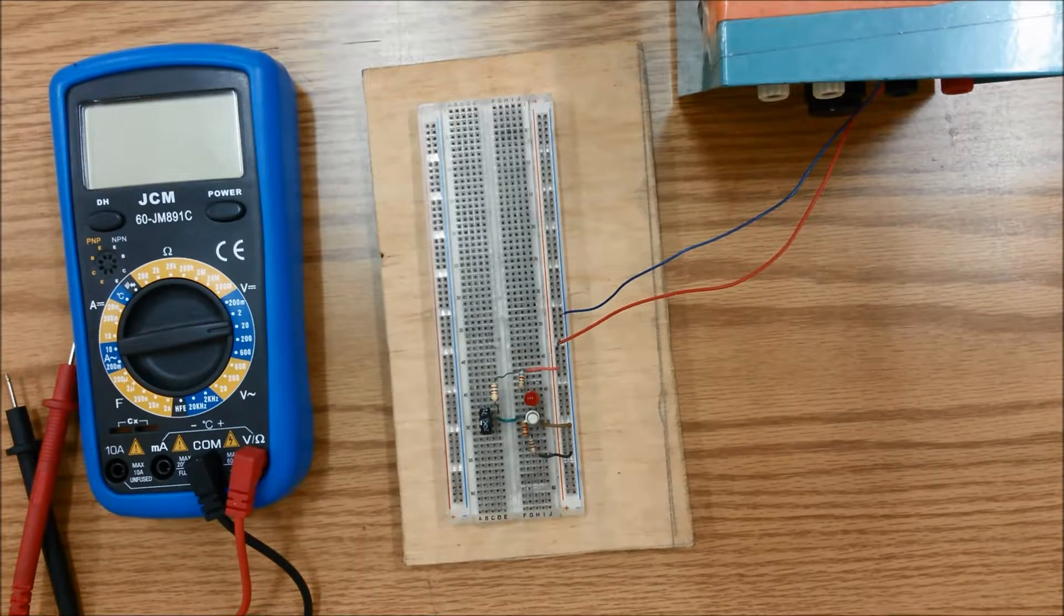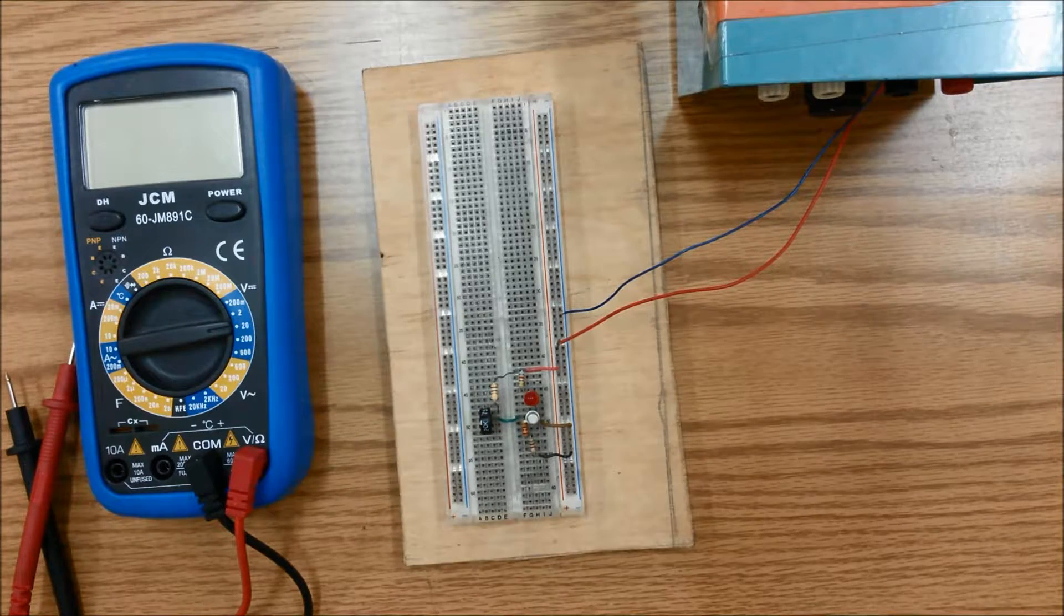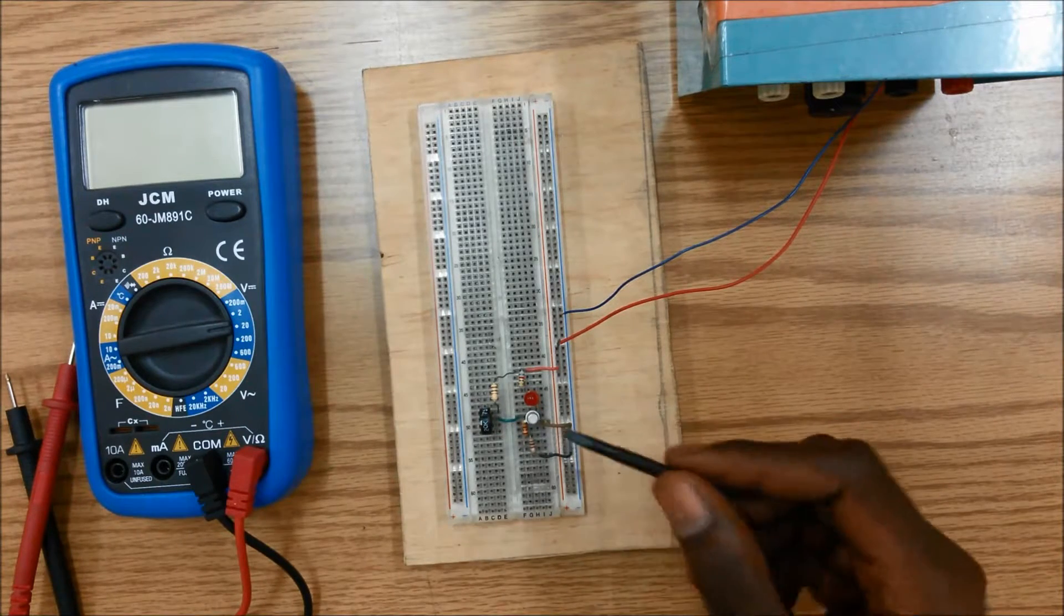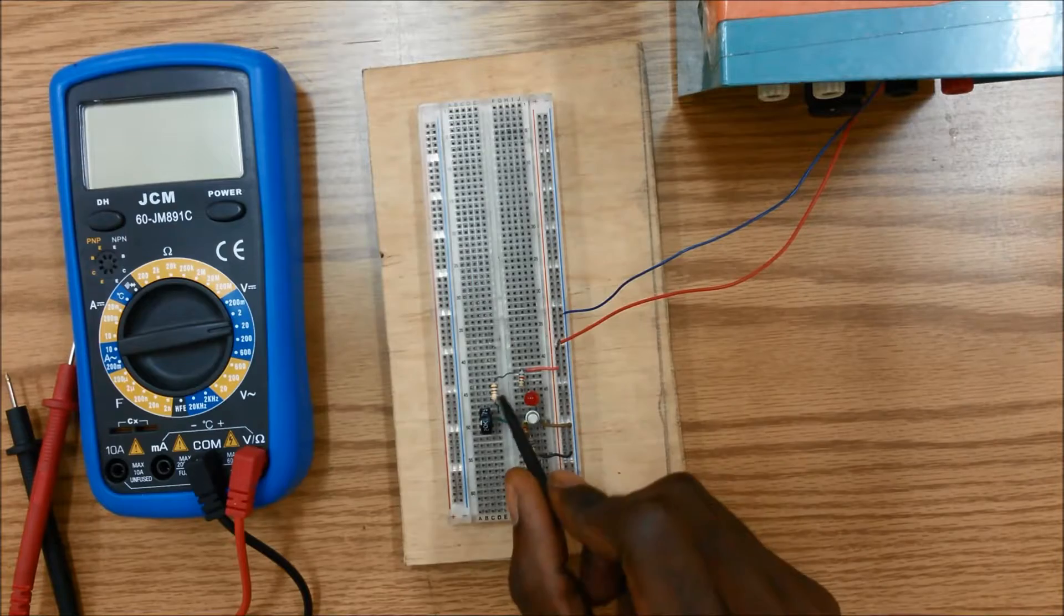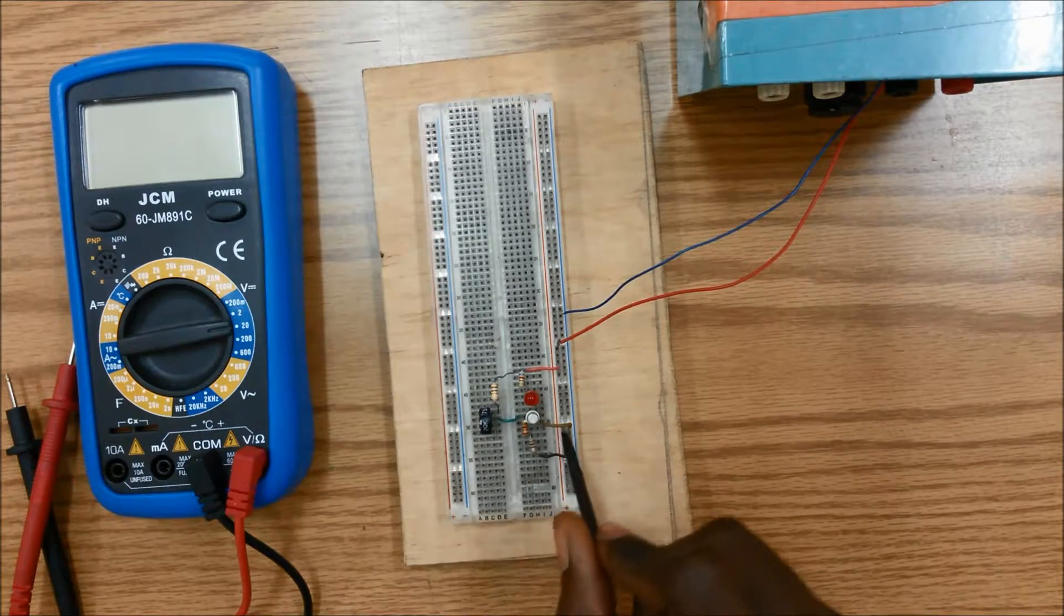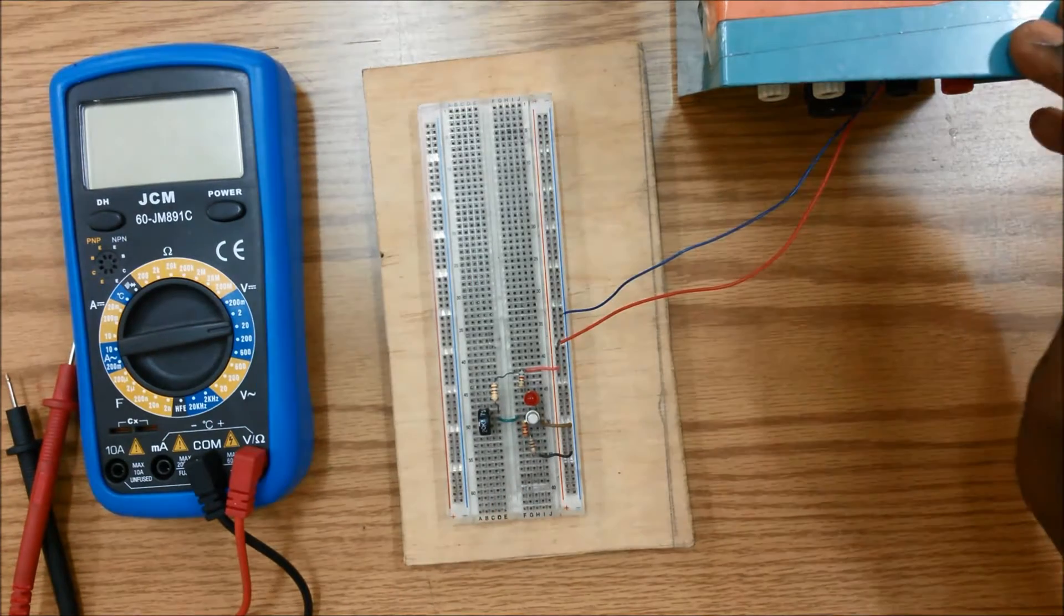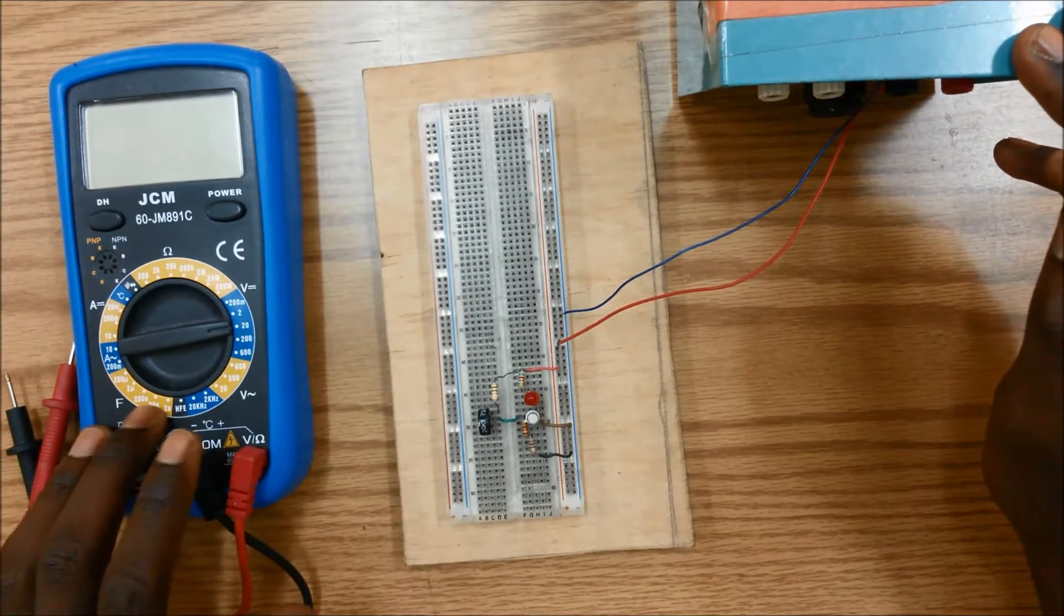So here I have a circuit that I've constructed consisting of a LED, a transistor and a couple resistors here and also some jumper wires. I also have a power source here and a multimeter.